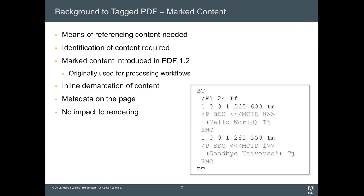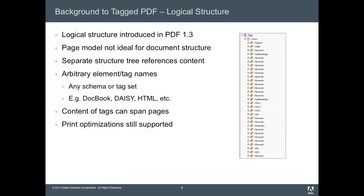So how did PDF address this? We introduced the concept of marked content in PDF 1.2. The idea behind marked content was that you could identify sequences of content on the page using inline operators. I've put some marked content around the actual text in the example — this helps identify it. But when we built marked content, there was still no concept of logical structure. It was more for workflow processing and allowed people to put private metadata into the content stream. The most important aspect was that it did not disrupt rendering in any way — the idea was that this is metadata on the page.